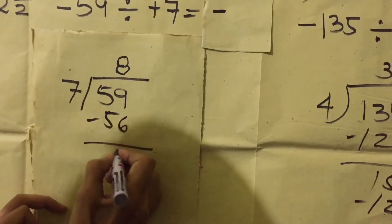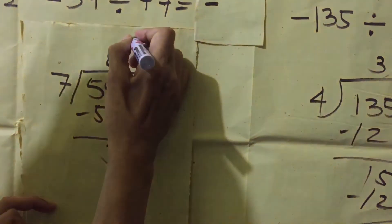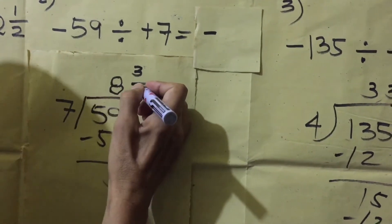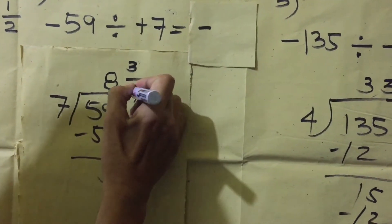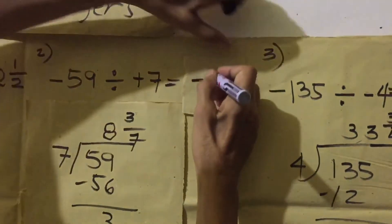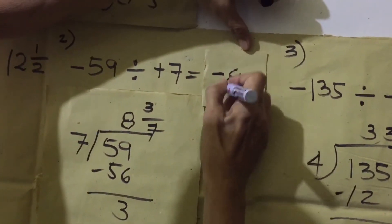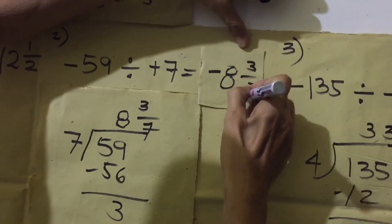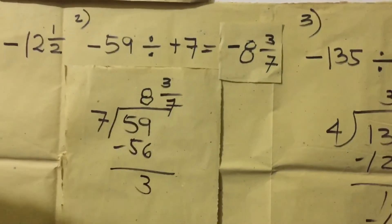59 minus 56 is 3. So, next number, 8 over 8, 3 over 7. Answer. The final answer here is 8, negative 8, 3 over 7. Okay, that's the answer.